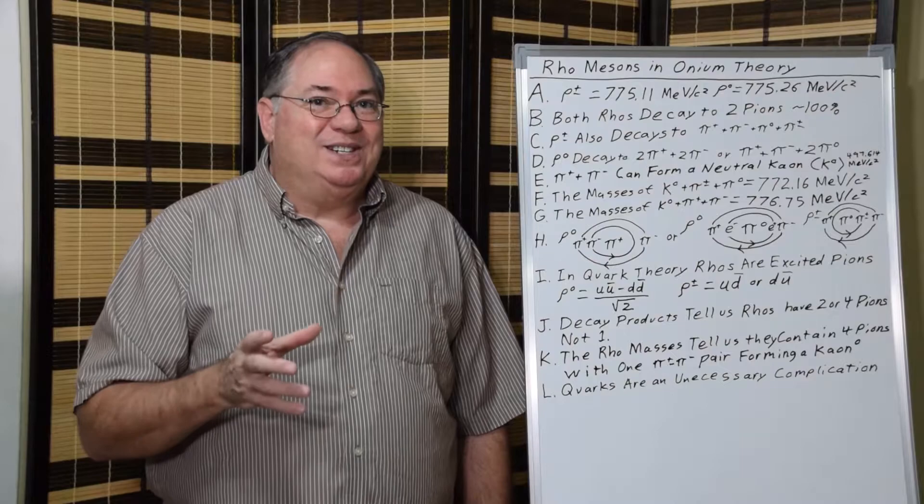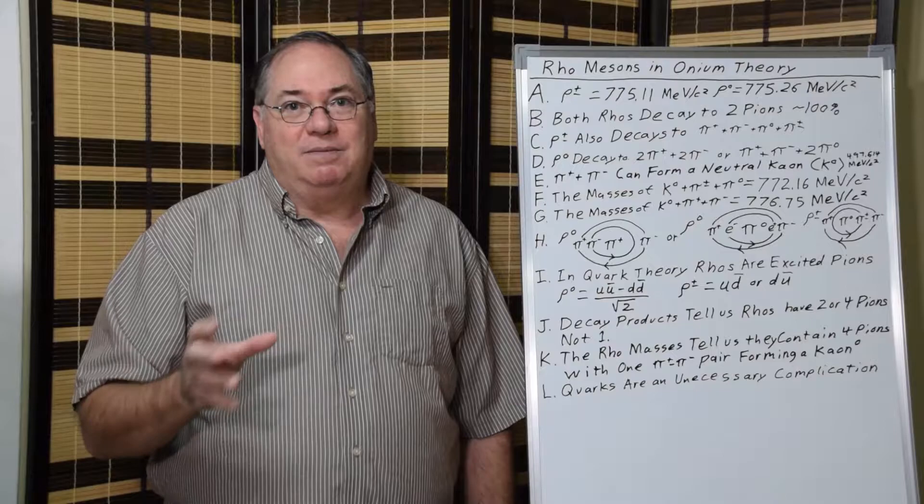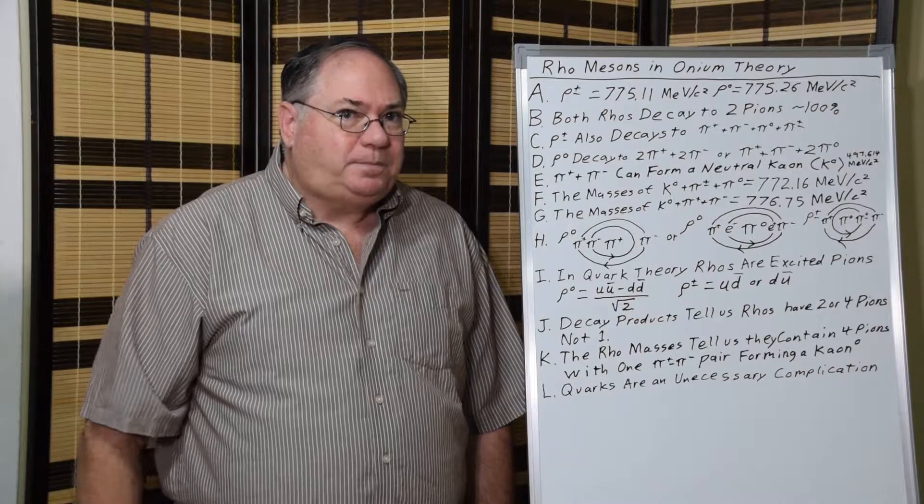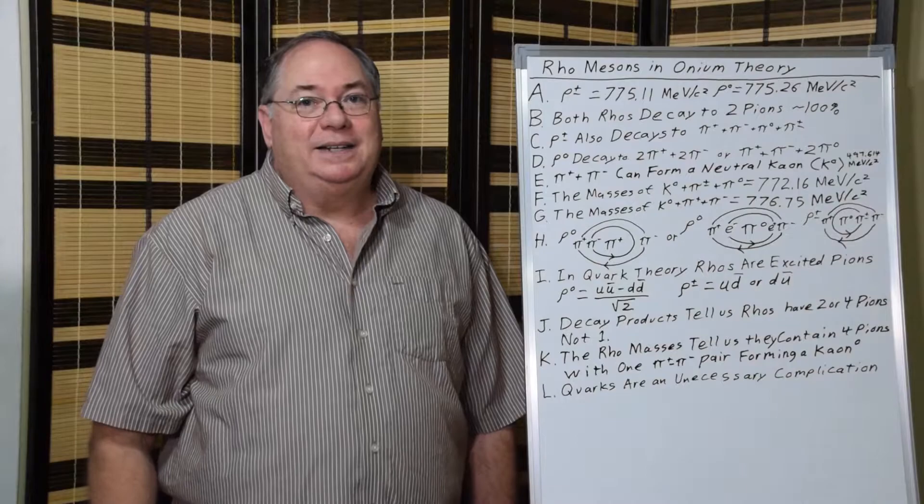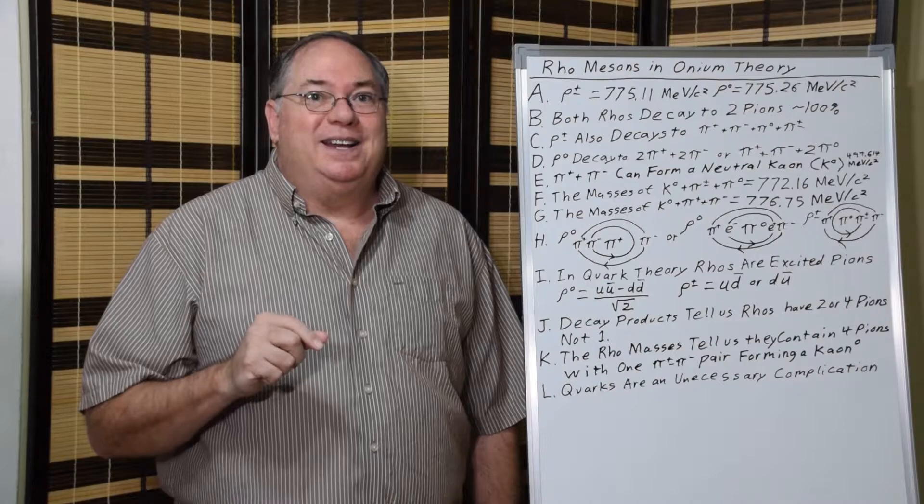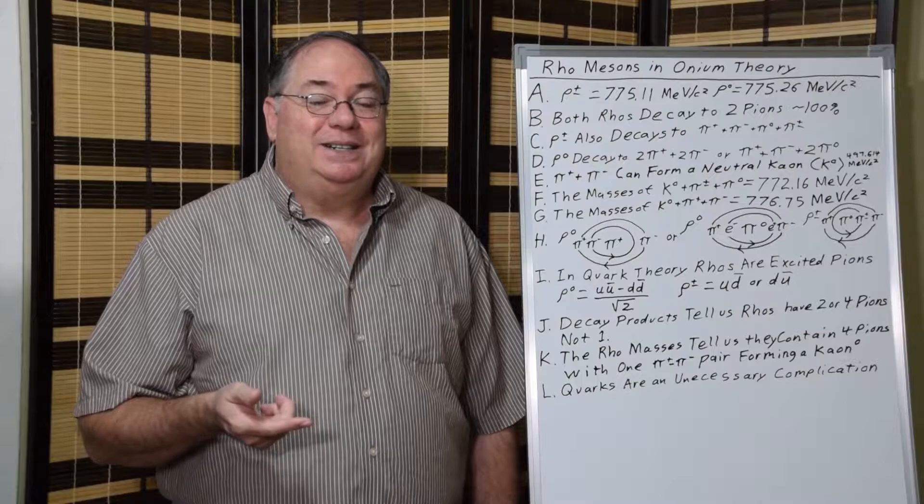If you're an actual physicist, you should look at the decay products to tell you what a resonance is made of, and that's the first clue. The second clue is that the positive charged rho meson is made of three charged pions and a neutral pion, because it can decay to that too.